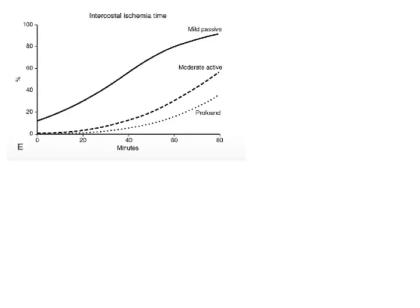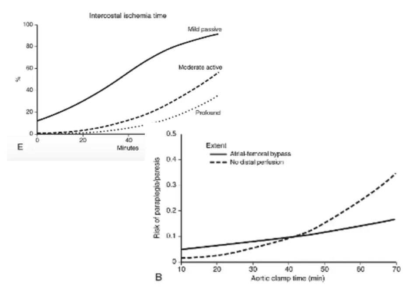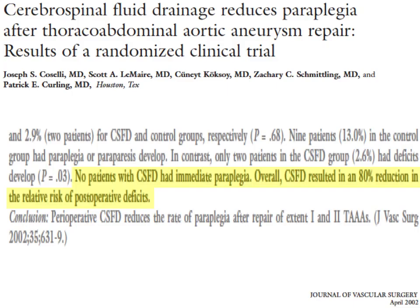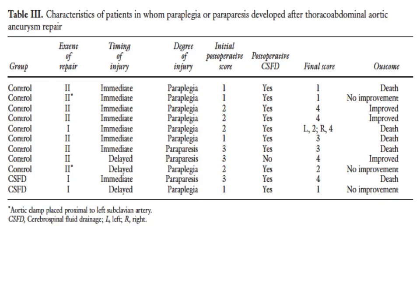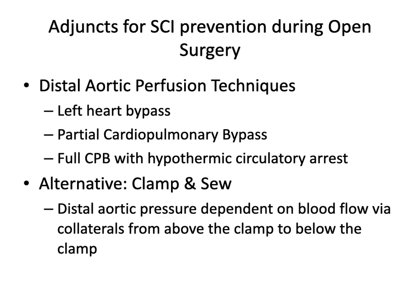A multimodal approach with active cooling and distal perfusion helps prevent spinal cord ischemia. A randomized study from Coselli's group in Houston on type 1 and type 2 thoracoabdominal aortic aneurysm repair demonstrated an 80% reduction in relative risk of postoperative neurological deficits with CSF drainage. Patients who develop spinal cord injury have a poor outcome, with about 50% mortality. Distal aortic perfusion techniques for open surgery include left heart bypass — draining either the left atrium or the proximal descending thoracic aorta — partial flow cardiopulmonary bypass, or full flow CPB with hypothermic circulatory arrest.